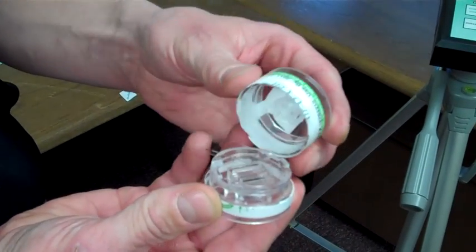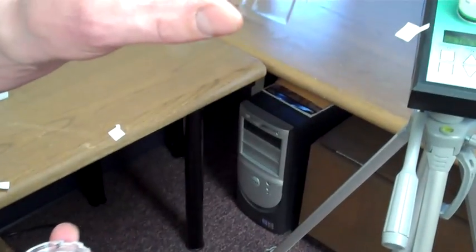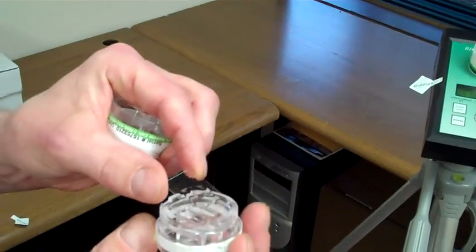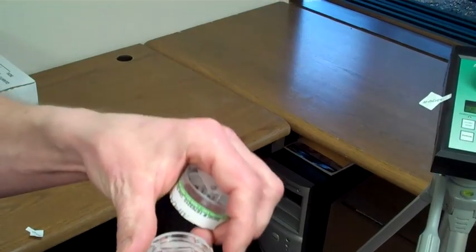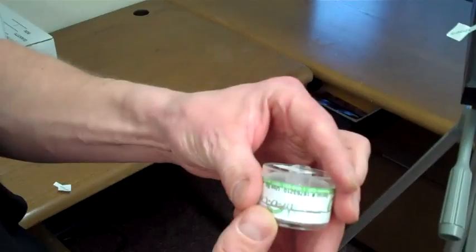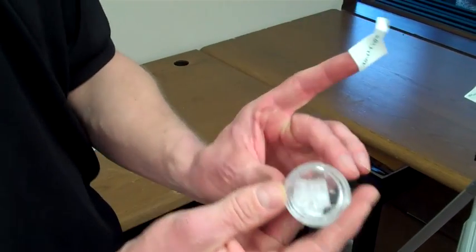Now he's going to pull that apart and inside you can see a slide. This slide has an adhesive on it that collects any particulate within the air including mold spores. This slide is what will later be analyzed in a laboratory.